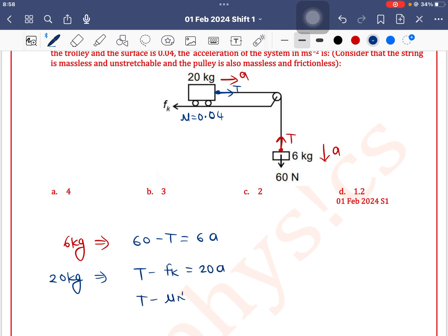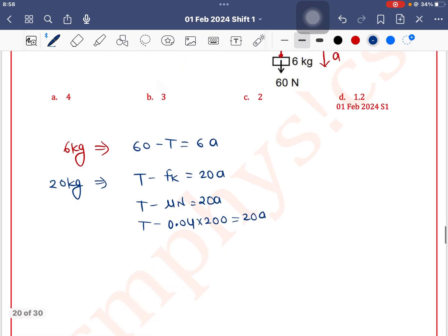Fk is mu into N is equal to 20a. What is normal? Normal will be mg. So mu is 0.04 into mg is 200, which is equal to 20a. So tension minus 0.04 into 200 is 8, is equal to 20a. So this is equation number 1, equation number 2.